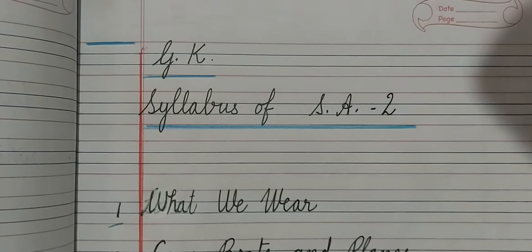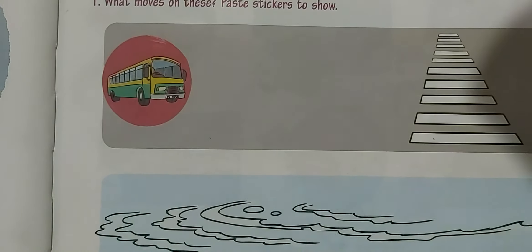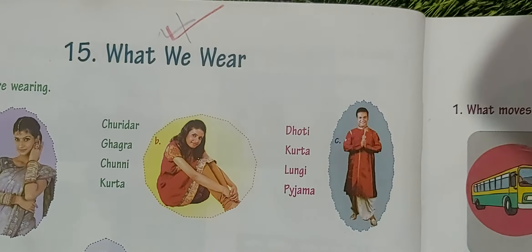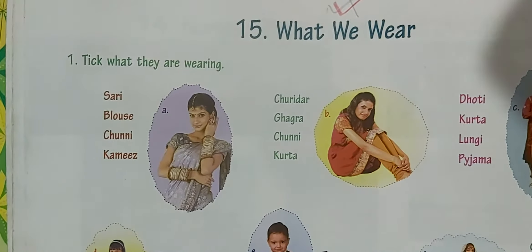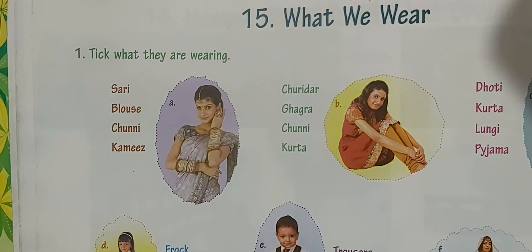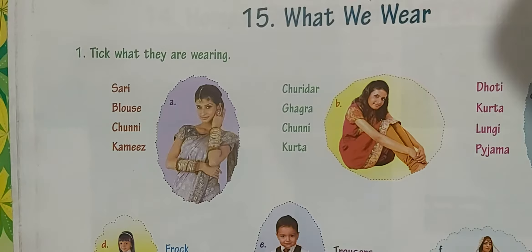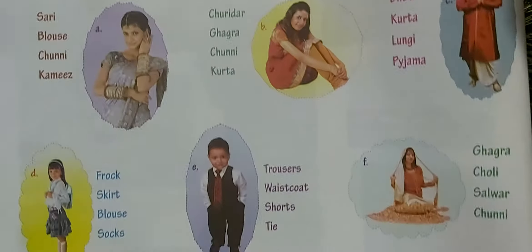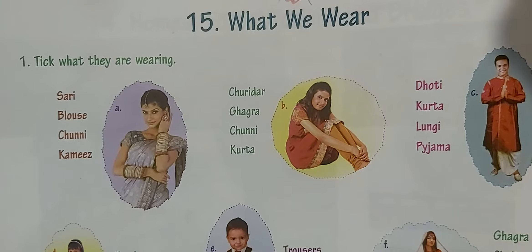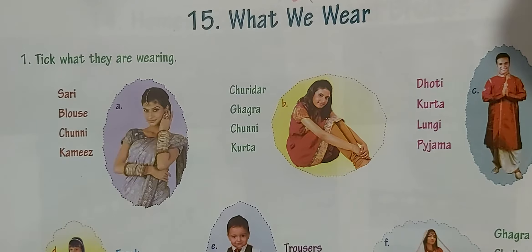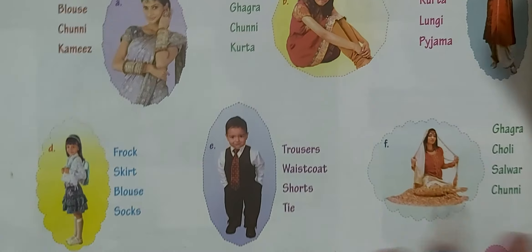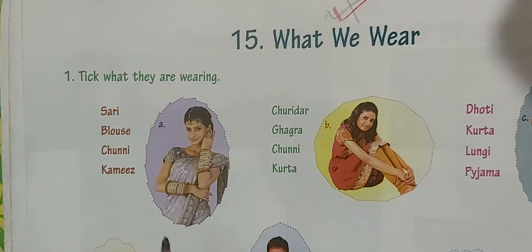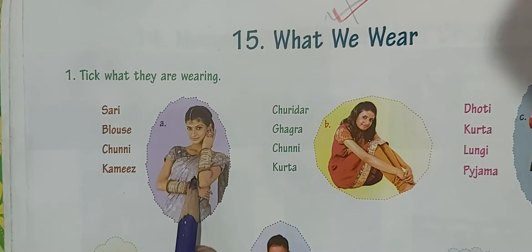After writing this, children, you will do book work. Open page number 15 — 'What We Wear' — and see what is given in this lesson. In this lesson there are a few pictures of Indian clothes and Indian attire. We have to put a tick mark on the clothes each person is wearing.